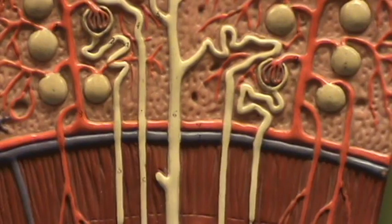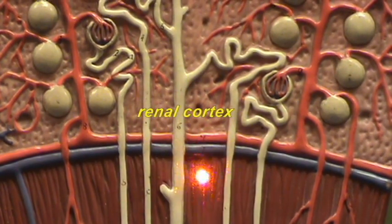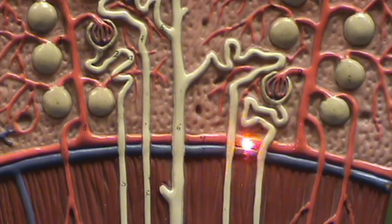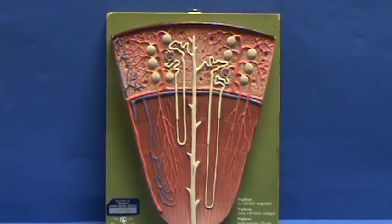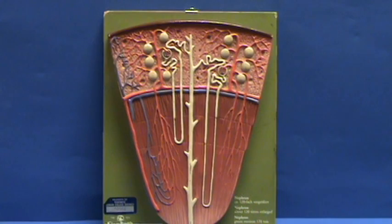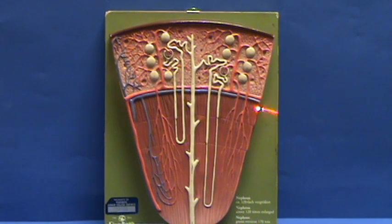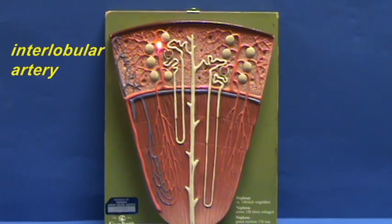Then you have the boundary between the renal cortex and the renal medulla, and right along this boundary you can see the arcuate artery and the arcuate vein. If we follow blood as it enters, it is going to enter by way of the interlobar artery, and the interlobar arteries are then going to give rise to the arcuate arteries. Coming off the arcuate arteries, you have the interlobular arteries.